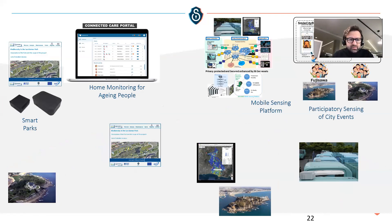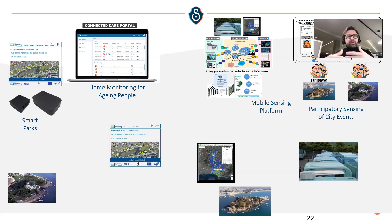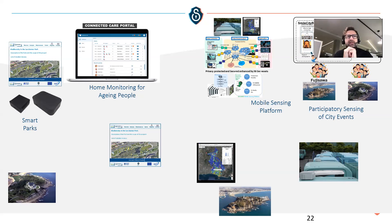Here are screenshots from different applications built using Sensinact: smart parking sensors, devices deployed in home environments for monitoring aging people to help them gain autonomy and trigger alerts in dangerous situations, and a mobile sensing platform for monitoring in real time data from garbage trucks. We also have participatory sensing, which gives citizens the power to use mobile applications and inform other users about interesting events in the city.